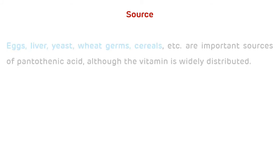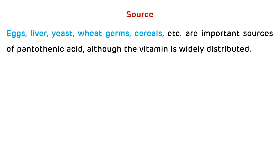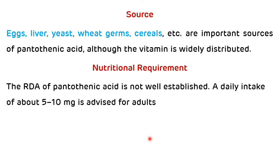Now dietary sources of pantothenic acid. Eggs, liver, yeast, wheat germs and cereals are important sources of pantothenic acid, although the vitamin is widely distributed in nature. Nutritional requirement: the recommended dietary allowance of pantothenic acid is not well established. A daily intake of about 5 to 10 milligrams is advised for adults.